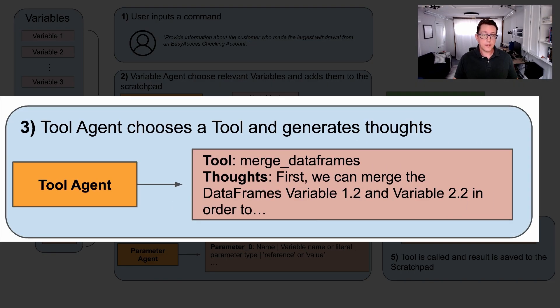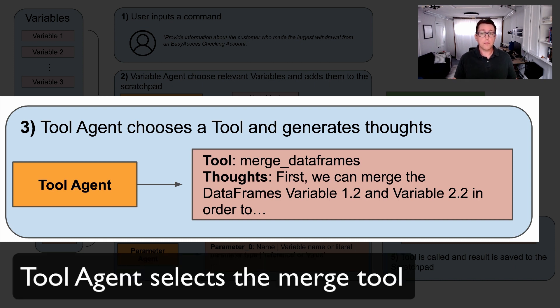Once we've identified the relevant variables, then we use a tool agent that selects the tool needed to construct part or all of the answer to the user question. In this case, the tool agent selects a merge tool to combine the two tables contained in the selected variables. Similar to the variable agent, the tool agent is an LLM that picks the best tool given the chosen variables and user question.